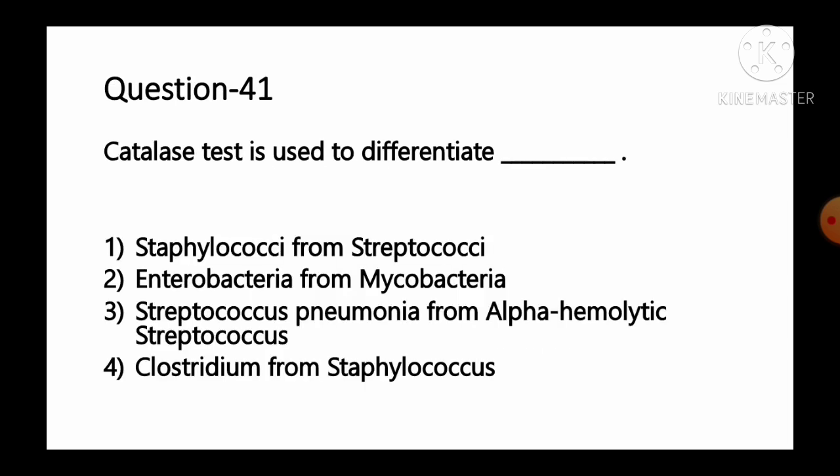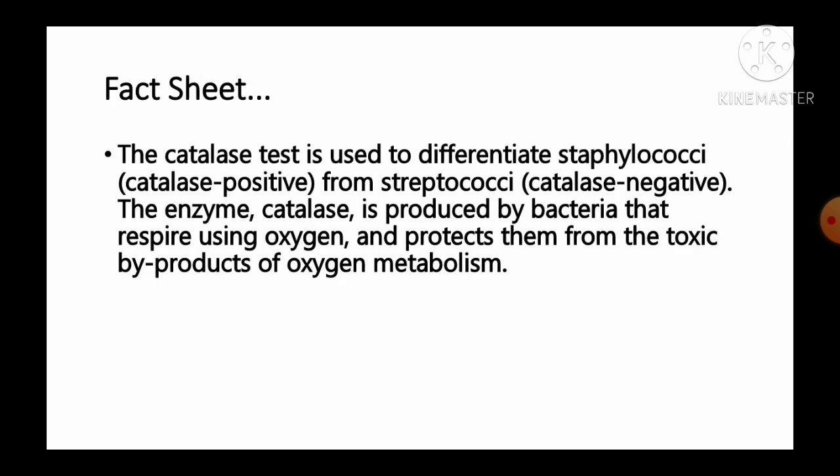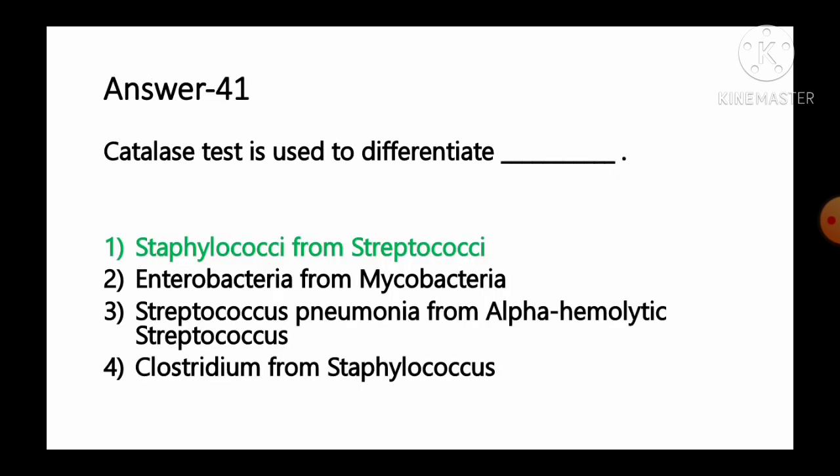Question number 41: Catalase test is used to differentiate — option 1 staphylococci from streptococci, option 2 Enterobacteria from Mycobacteria, option 3 Streptococcus pneumoniae from alpha-hemolytic Streptococcus, option 4 Clostridium from Staphylococcus. The catalase test is used to differentiate staphylococci (catalase positive) from streptococci (catalase negative). The enzyme catalase is produced by bacteria that respire using oxygen and protects them from the toxic byproducts of oxygen metabolism. So option number 1 is the correct answer.